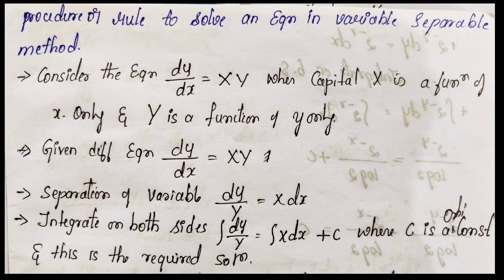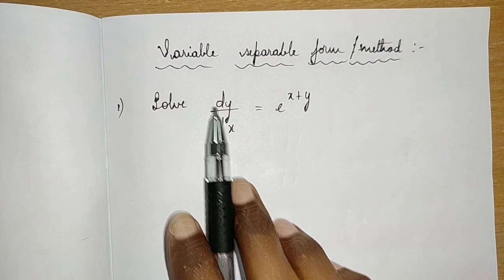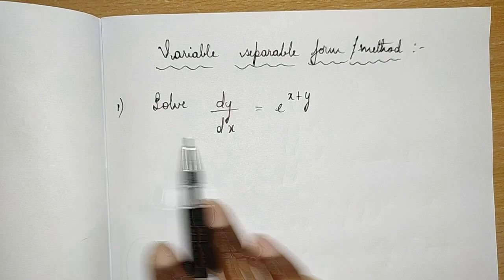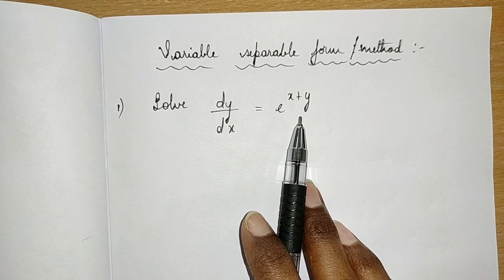The procedure: consider dy/dx = X(x)·Y(y). We separate y with dy and x with dx. Then integrate both sides so that integration and differentiation cancel, leaving only x and y terms plus an integration constant c. Let us see this with an example: solve dy/dx = e^(x+y).